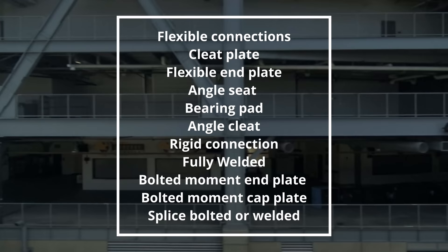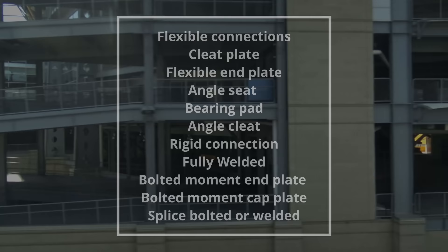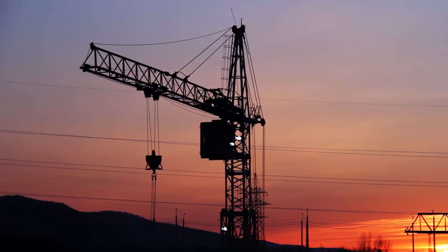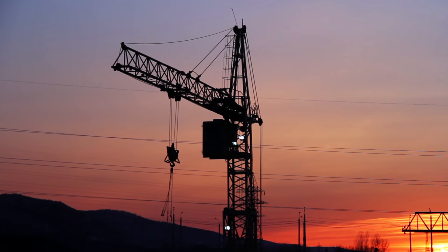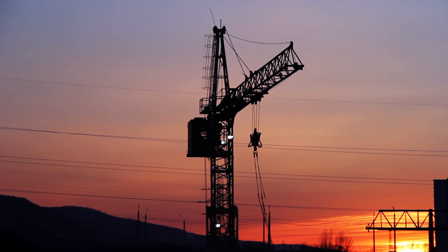This is really where you should be spending most of your time — not only because of the lack of redundancy in a connection design, but also to allow the builder to put it together. Steel frame design is not being assembled inside a factory; you have people on site, so you want to keep it quick, simple, and easy to put together while accounting for site constraints. There are many different connection types: flexible connections, cleat plates, flexible end plates, angle seat plates, bearing pads, cleat angles, rigid connections including fully welded, bolted moment end plates, bolted cap plates, and splice connections either welded or bolted. It's important to know the limits and constraints of each and where to apply them.